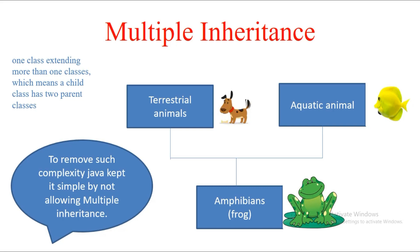Hi guys, welcome to Code Decode. Today we are going to find an answer to a very important interview question asked during Java core interviews: how can you implement multiple inheritance in Java? We have seen this before — we cannot implement multiple inheritance with classes because when a child extends two or more parent classes and the parent classes have common methods, issues arise.